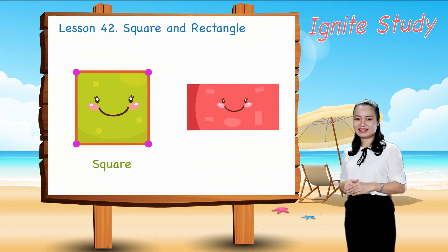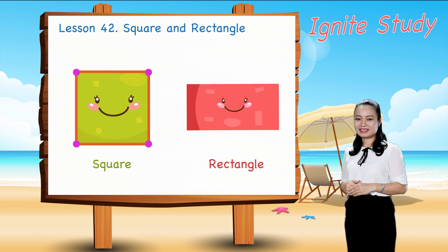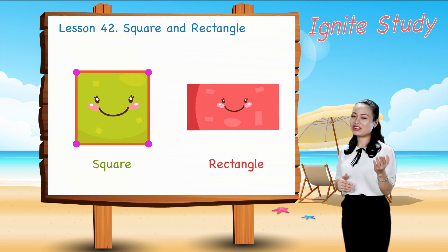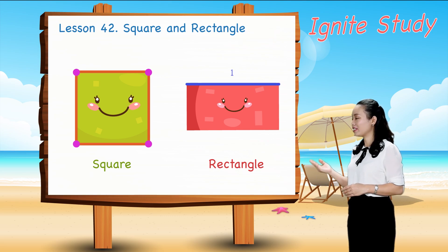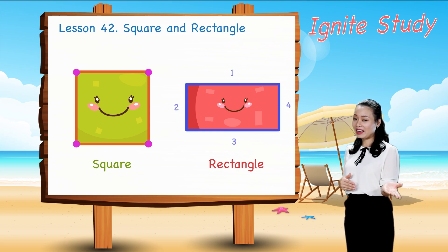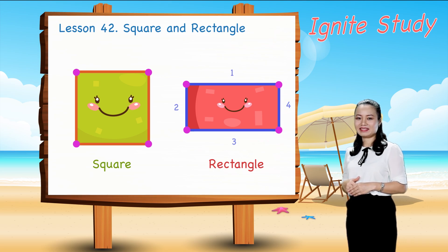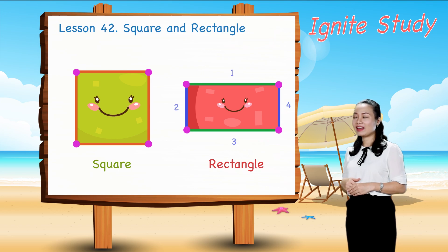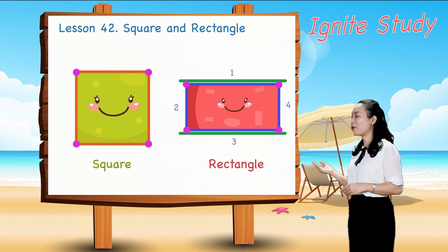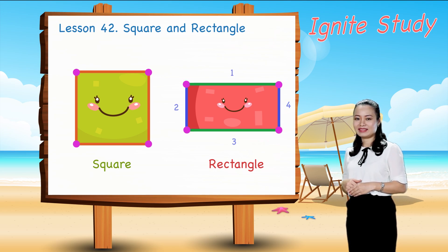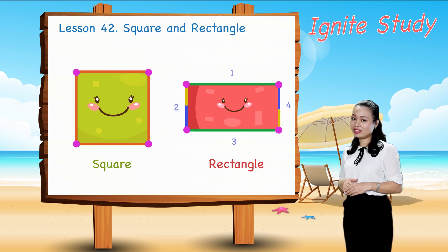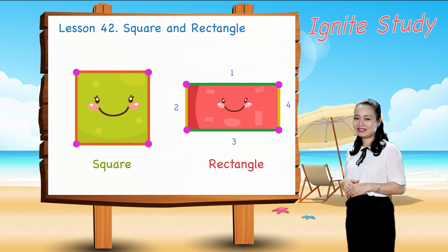Look. This is a rectangle. It also has 4 straight sides and 4 corners. These are opposite sides — they are equal. These are opposite sides too, they are also equal.